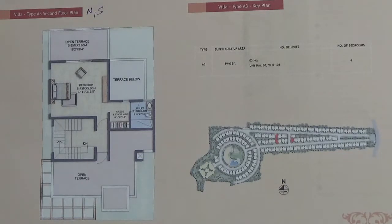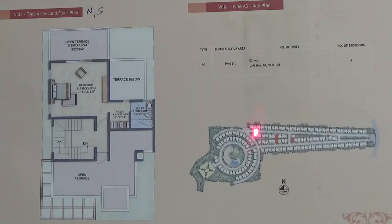These are the orientations in the master plan of the A3 type villa. There are two villas with south facing and one villa with north facing — a total of three A3 type villas in this project.